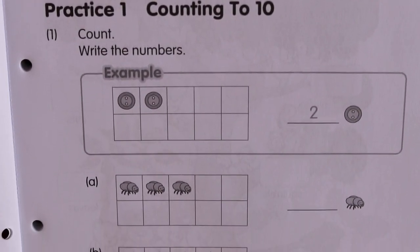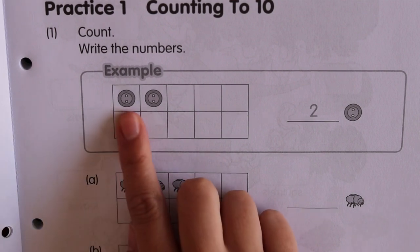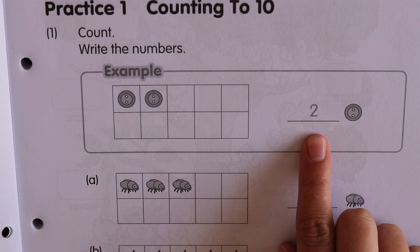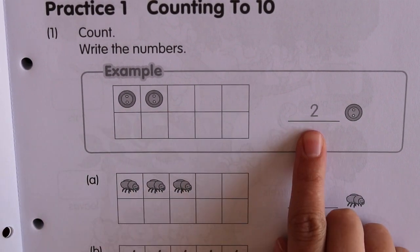So there they give you an example. All you need to do is count the objects and write the number down. So there were two buttons and you wrote a 2.